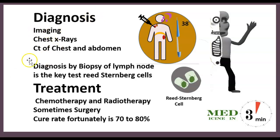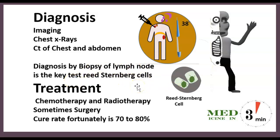For diagnosis, you want to take images: a chest X-ray and a CT scan of the chest and abdomen. But most importantly, you want to do a biopsy of the lymph nodes, because through that you will be able to test for the presence of Reed-Sternberg cells, which will confirm Hodgkin's Lymphoma. In terms of treatment, you're looking at chemotherapy and radiotherapy, sometimes surgery. The cure rate is fortunately 70 to 80% — this is one of the rarest cancers with such a high cure rate.